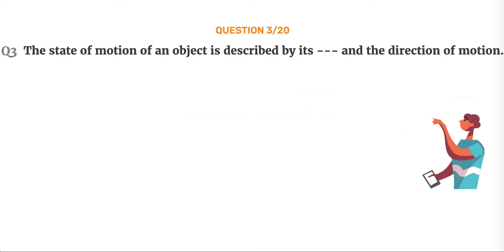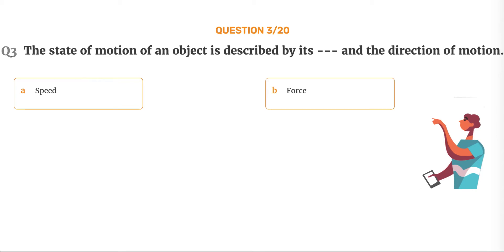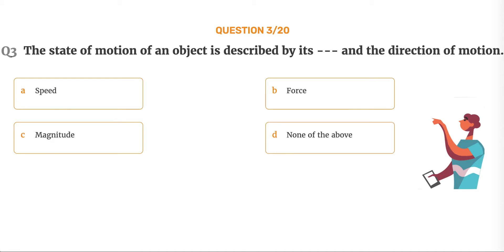Question number 3. The state of motion of an object is described by its blank and the direction of motion. Option A: Speed. Option B: Force. Option C: Magnitude. Option D: None of the above.